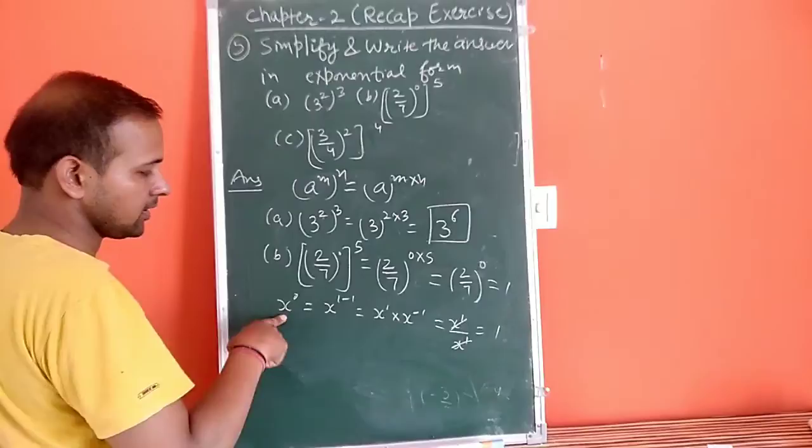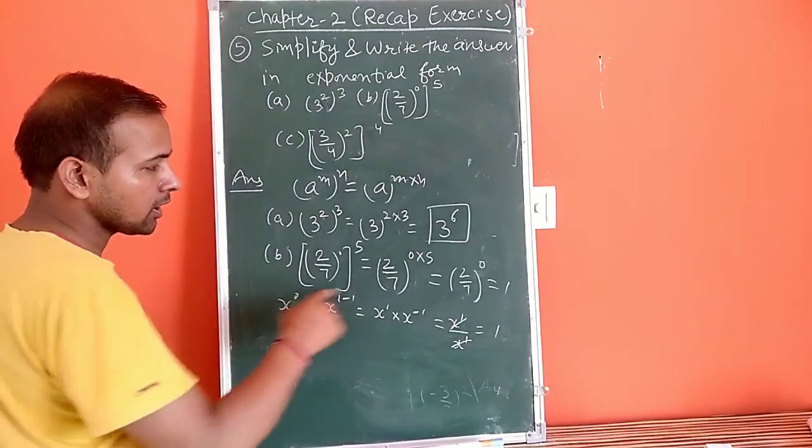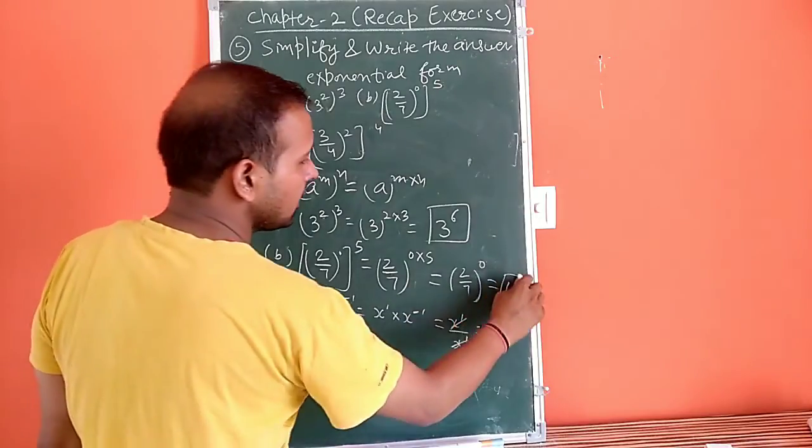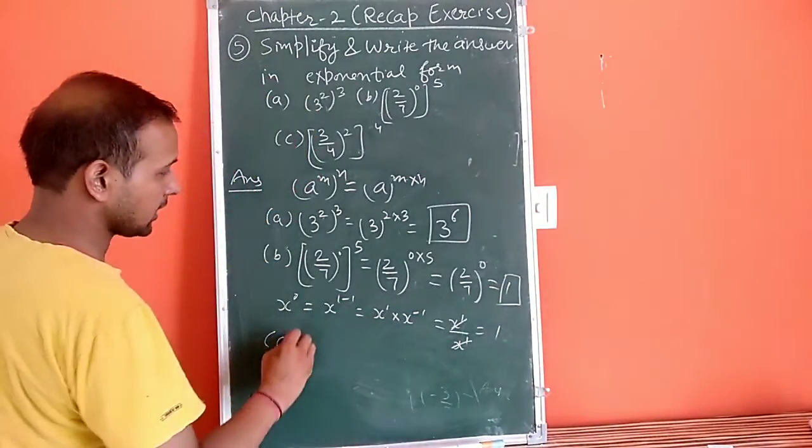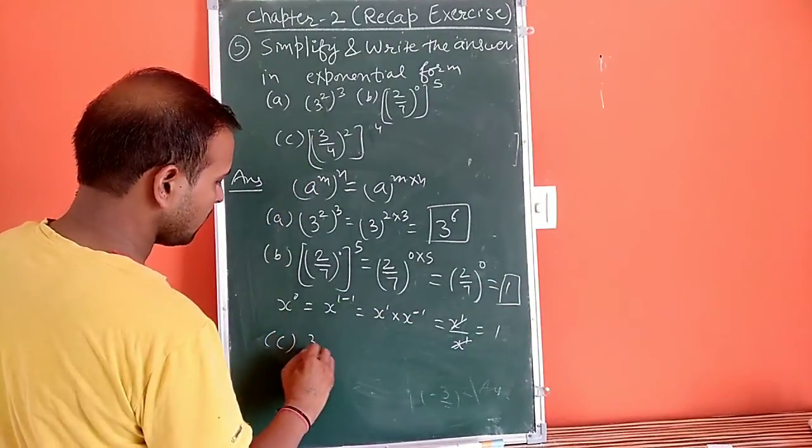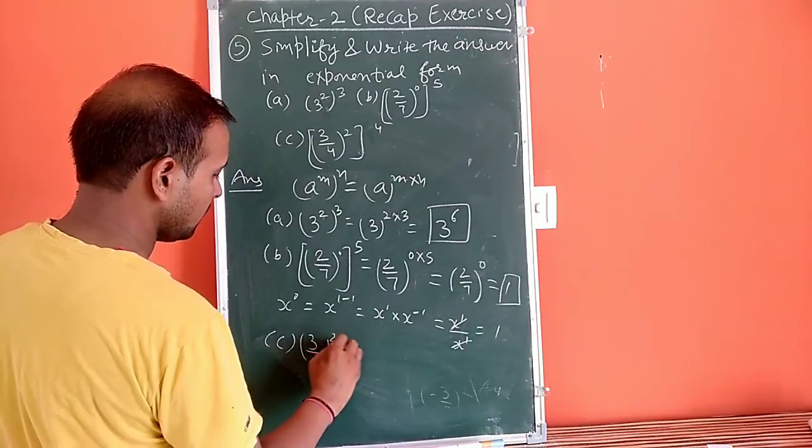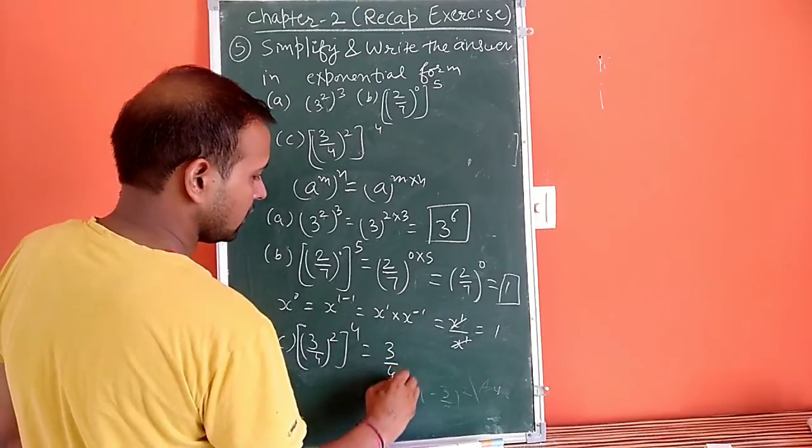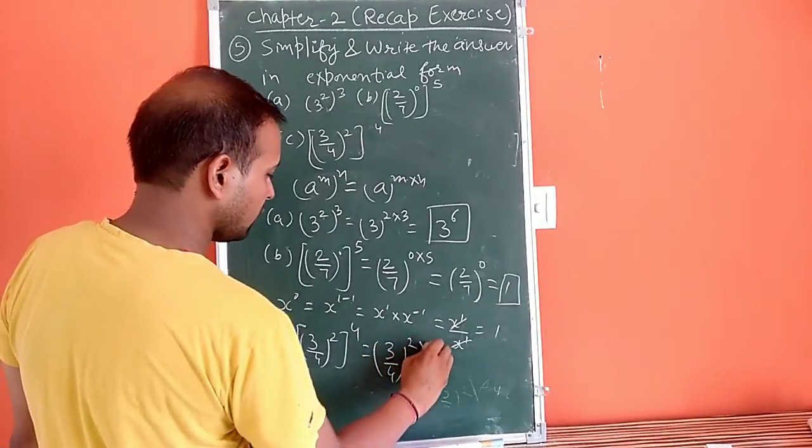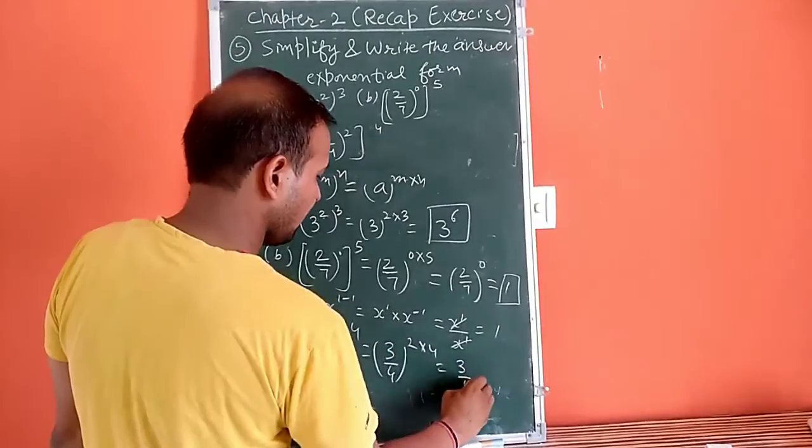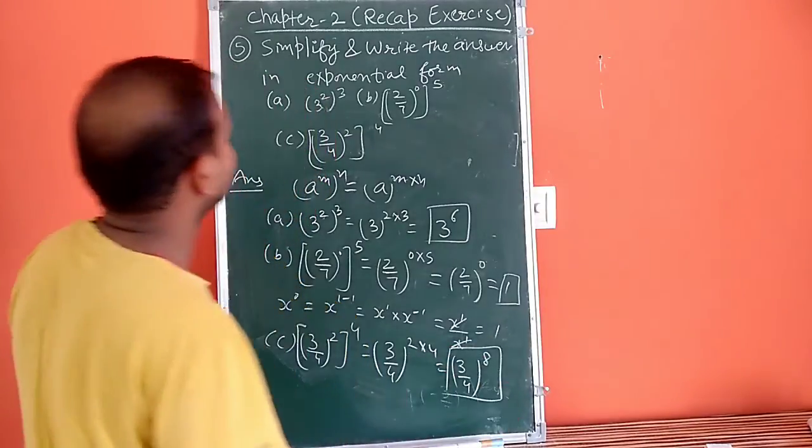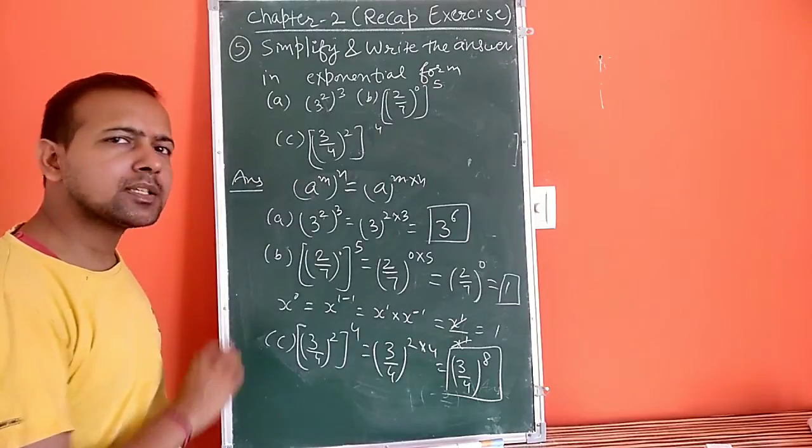So x to the power 0 is equal to 1. Now part (c): (3/4) to the power 2 and then to the power 4. (3/4) to the power 2 into 4 equals (3/4) to the power 8. So this was question number 5.